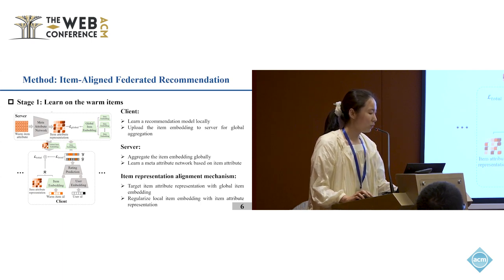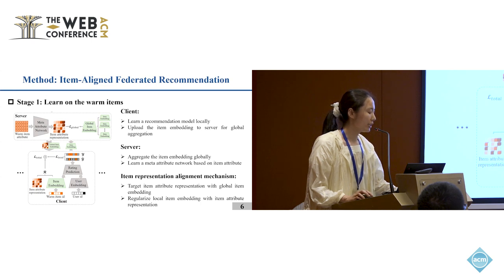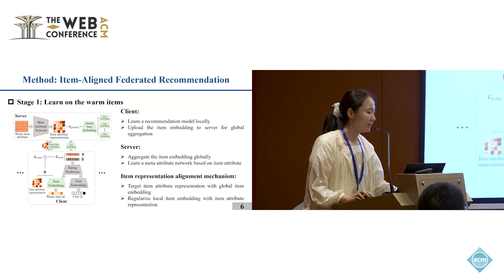For stage one, the client first learns a recommendation model locally and uploads the item embedding to the server for global aggregation. Then the server aggregates the item embeddings globally and learns a meta attribute network based on the item attributes.